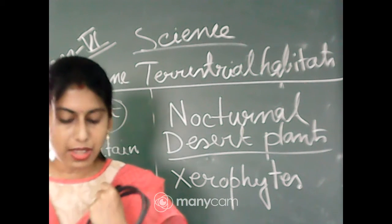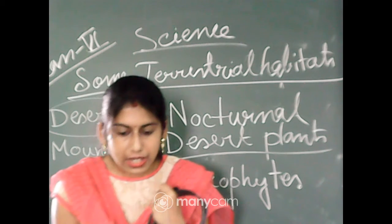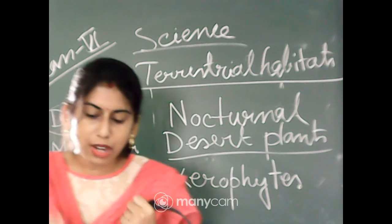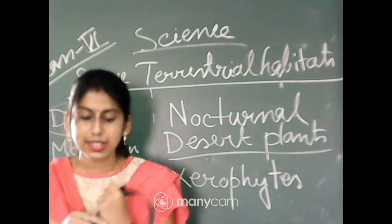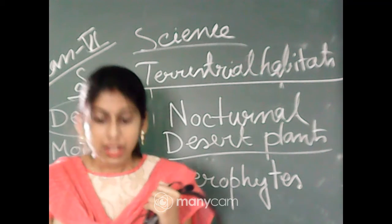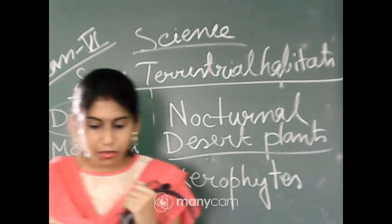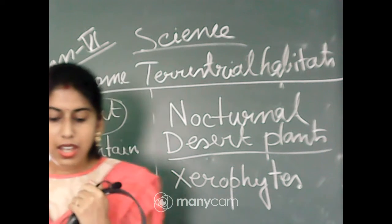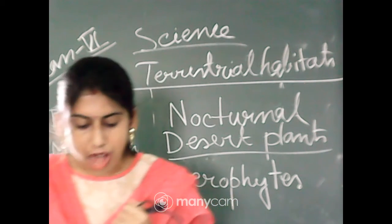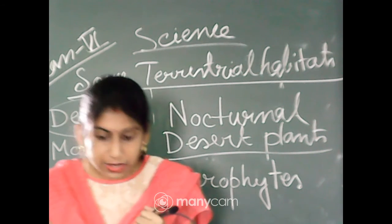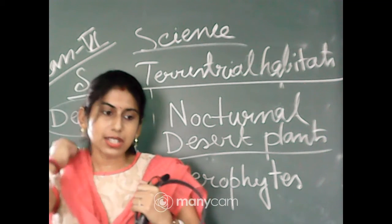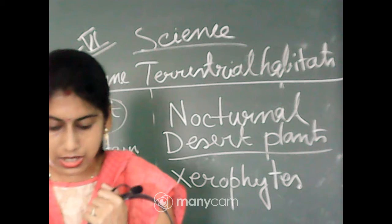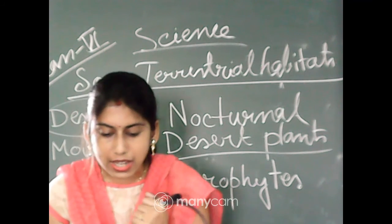The plants that grow under very poor water conditions, such as in a desert, are called xerophytes. Examples of xerophytes include cactus. These plants are adapted to the hot and dry climate of the desert. They can store water in their spongy stems, and sometimes they are called succulent plants.